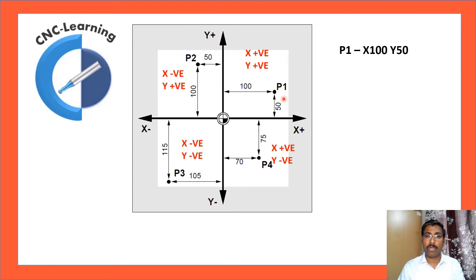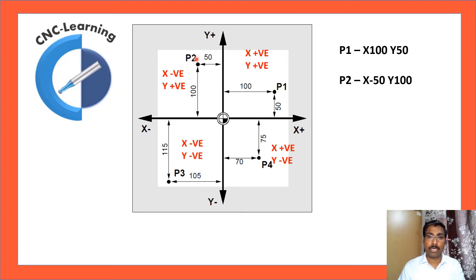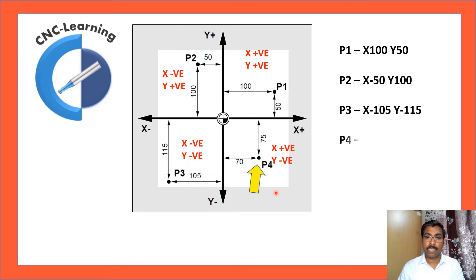Let us see the coordinates for each point. P1 is X100, Y50 — it is to the right and upper side, so both are positive. P2 is X-minus 50, Y100 — it lies on the left side so X is minus, and upper side so Y is plus. P3 is X-minus 105, Y-minus 150. P4 is X70, Y-minus 75.